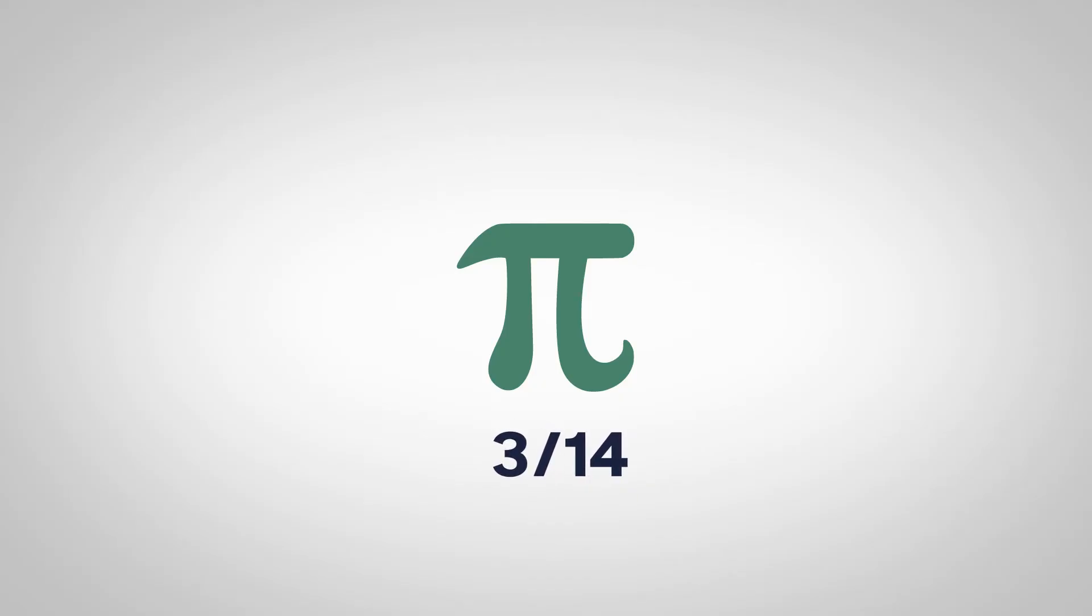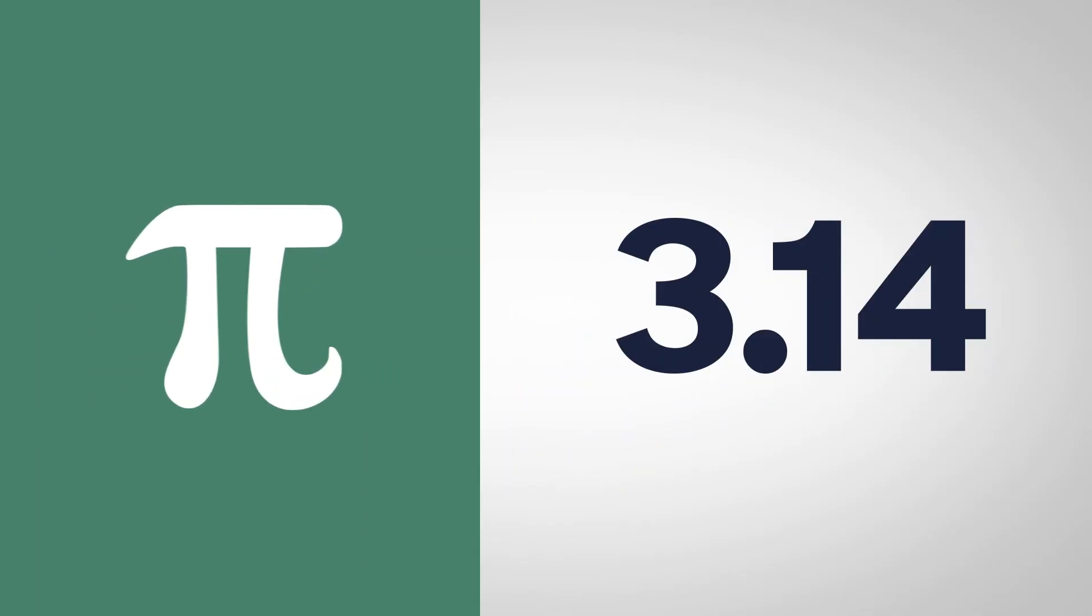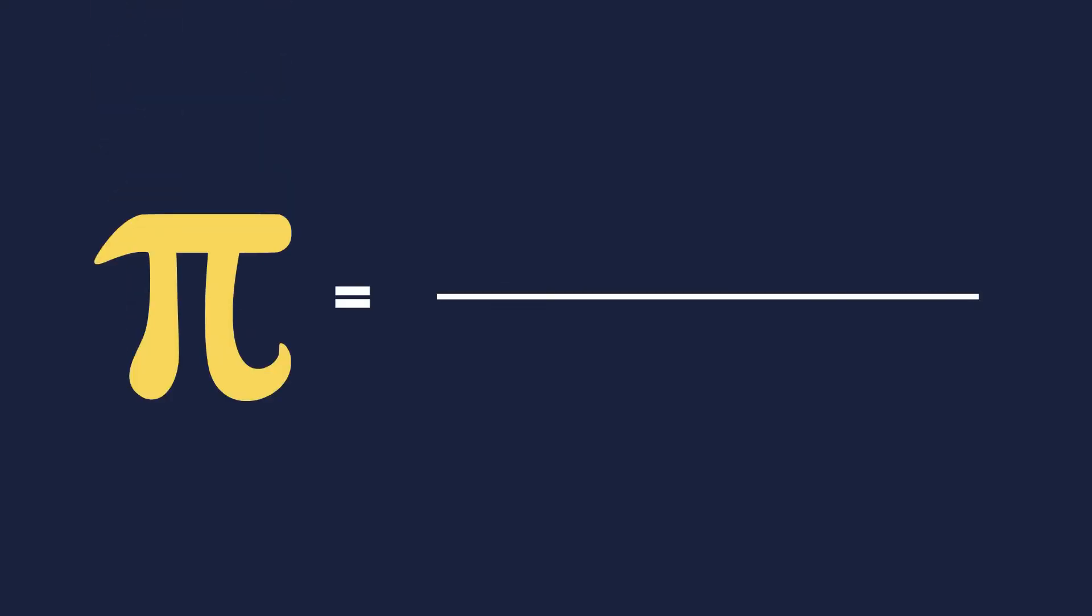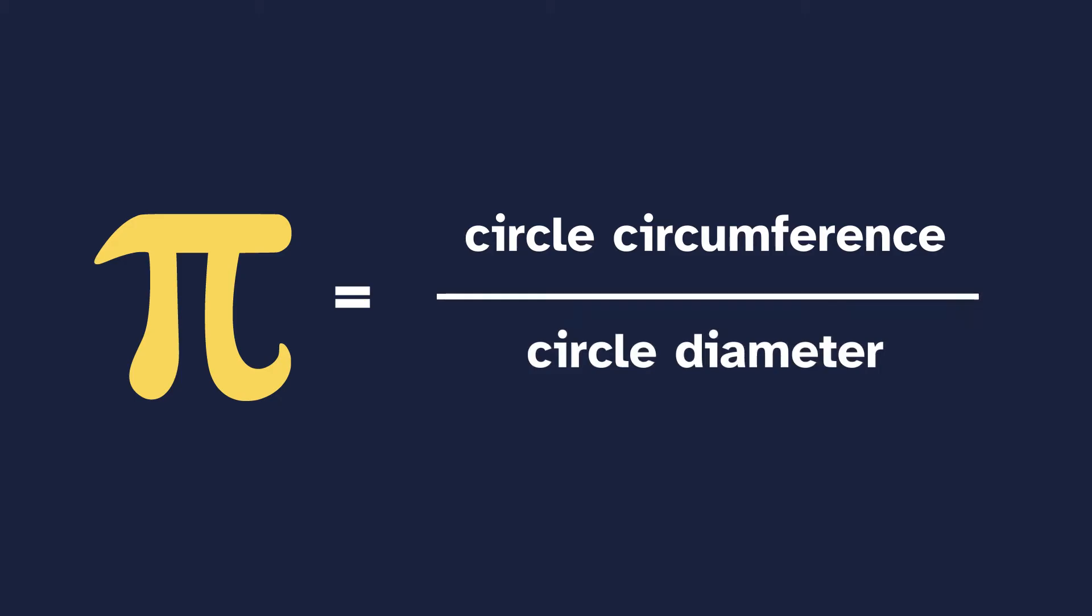So what is Pi? 3.14 approximately. Let me explain. Pi is the ratio of a circle's circumference to its diameter. Okay, what's that mean?